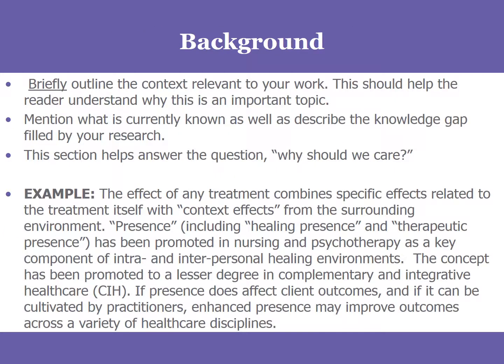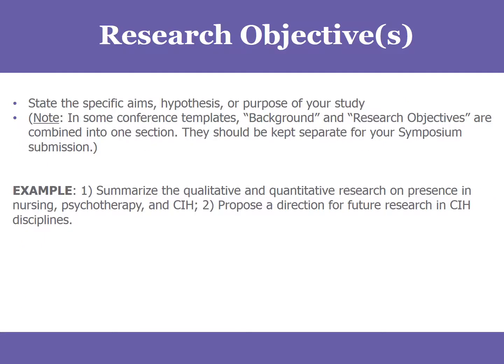Then comes the background, where you're going to describe the nature of the problem and why this review is necessary — why a review on this particular topic should be done. Below you see an example of that. Then comes the objectives — what it is that you set out to do by conducting this literature review. In this case, there are two objectives, though you may just have one and that's fine. In some other conferences, you might see that the objectives and the background are in one section, but in our template they're separated.